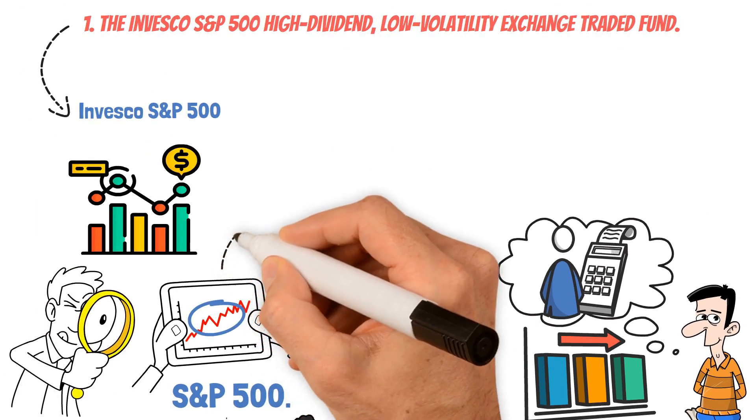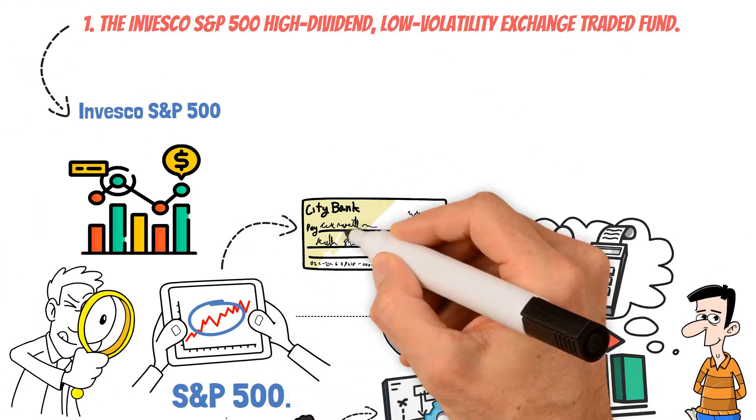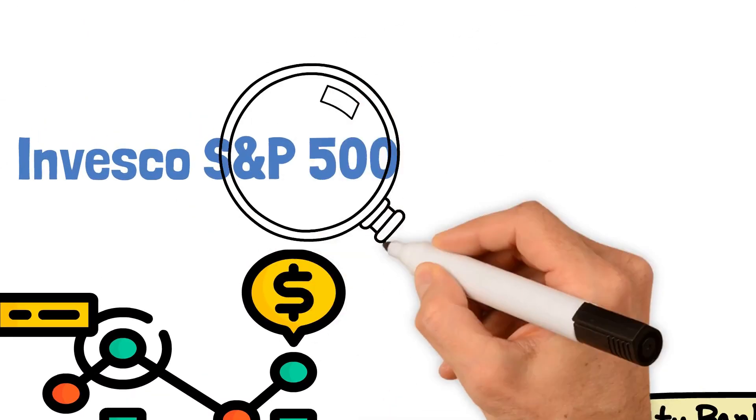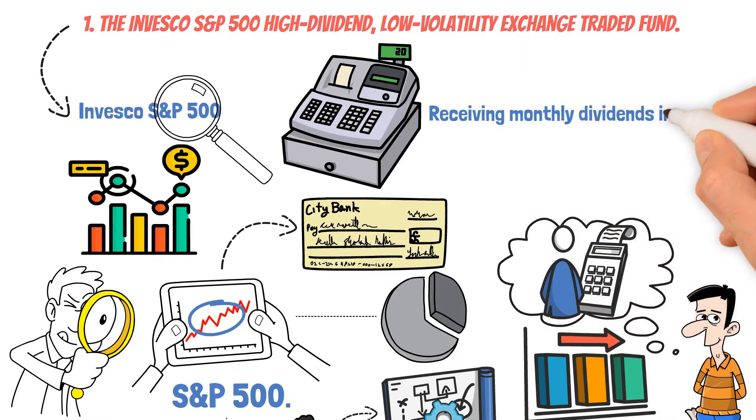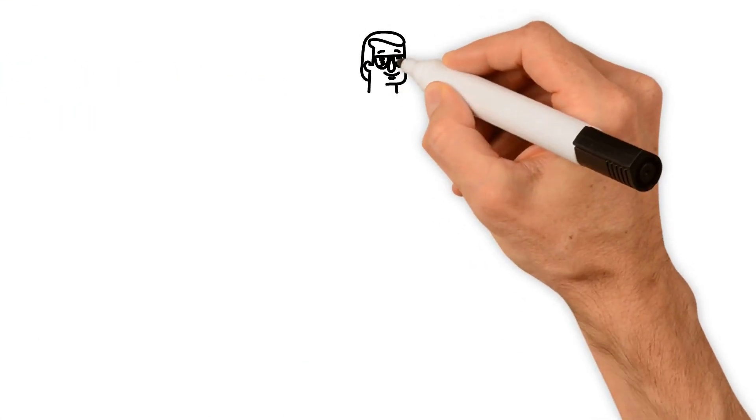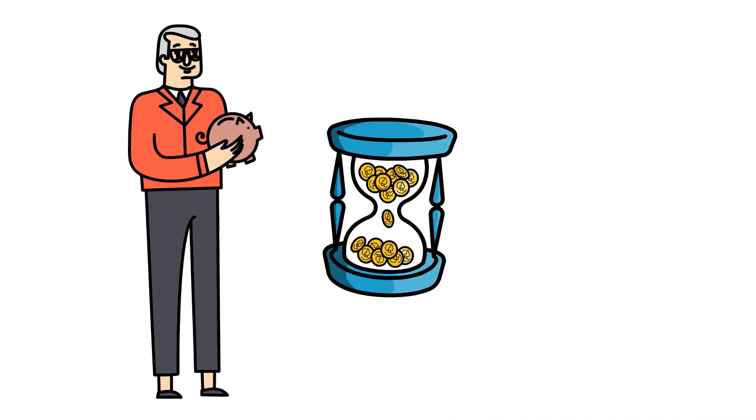One significant advantage of this ETF is its impressive track record of delivering steady income. With focus on high-dividend-yielding stocks, investors can expect more frequent payouts, receiving monthly dividends instead of the conventional quarterly schedule. This predictable income stream is particularly valuable for retirees or those seeking regular cash flow to manage their expenses effectively.